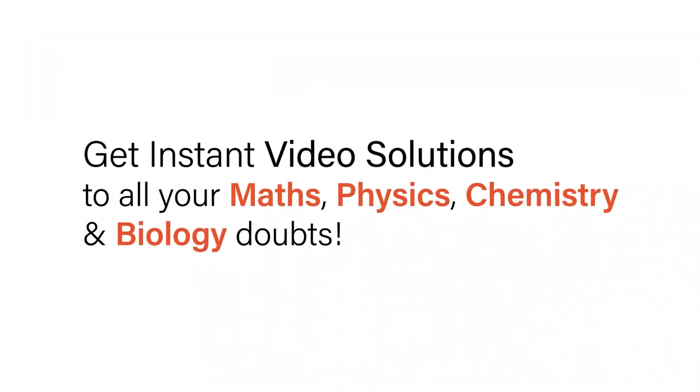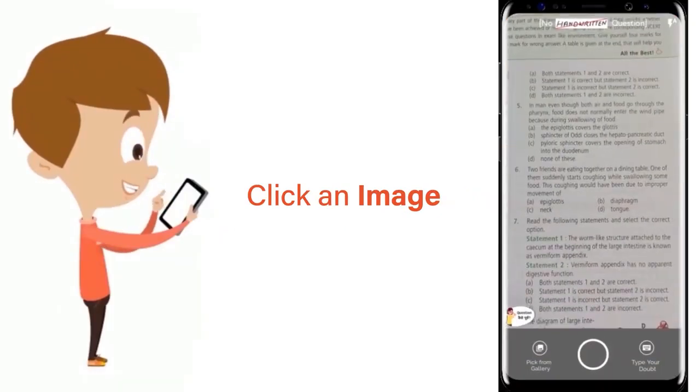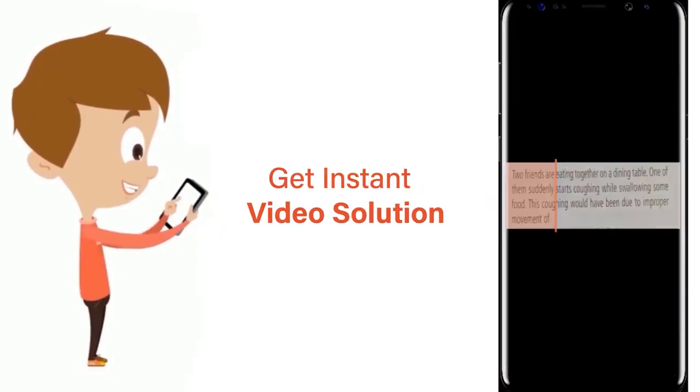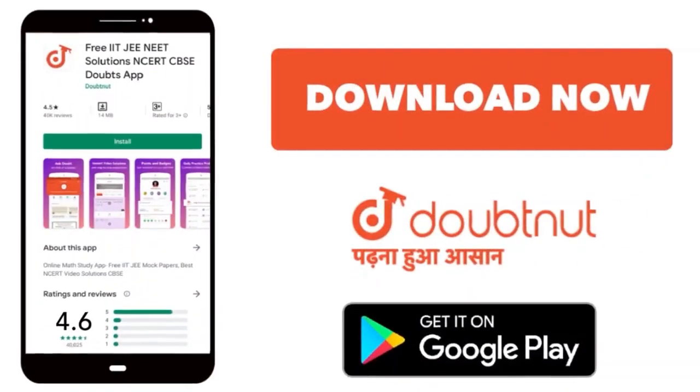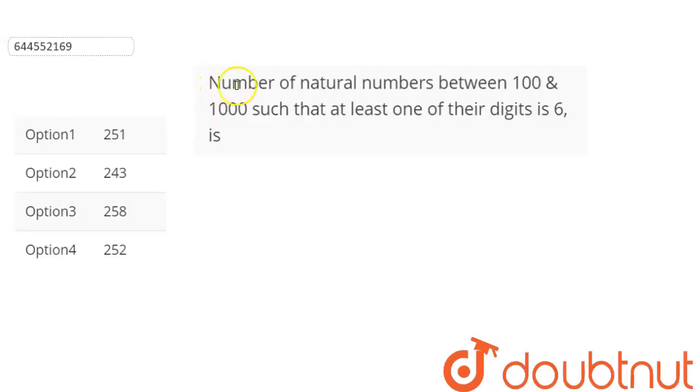With Doubtnet, get instant video solutions to all your maths, physics, chemistry, and biology doubts. Just click the image of the question, crop the question, and get instant video solution. Download Doubtnet app today. The question is the number of natural numbers between 100 and 1000 such that at least one of their digit is 6 is.